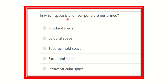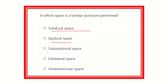In which space is a lumbar puncture performed? We have to find out the space where the lumbar puncture is performed in the lumbar region of the vertebral column. The options are: subdural space, epidural space, subarachnoid space, extradural space, and interventricular space.